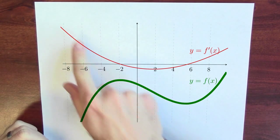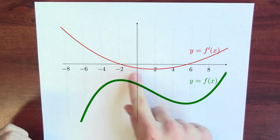And note that when its derivative is positive, the function is increasing. And when the derivative is negative, the function is decreasing.